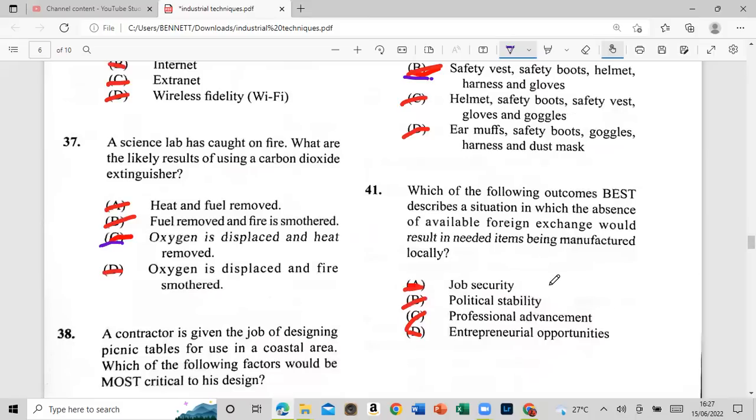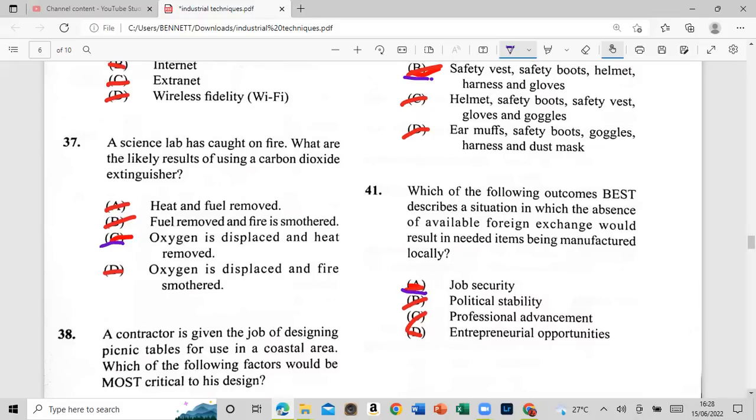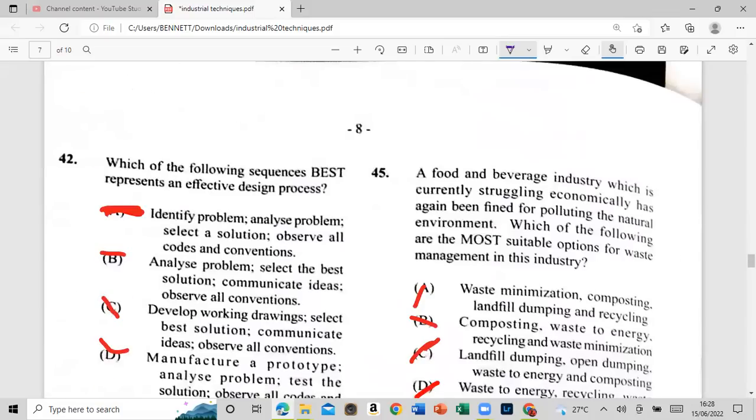So now we'll be talking about this in the other one. Which of the following outcome best describe a situation in which the absence of a bail requiring extreme to be resolved in needed items being manufactured locally? Is it A: job security? Is it A: job security? D: political security? C: professional advancement? Or D: entrepreneurial opportunities? And that is A: job security. Guys, I open again. I want you to play back and open again. 42.